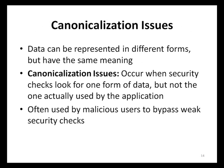Data can be represented in many different forms but still hold the same meaning — for instance, the word 'dog' can be represented in French, English, and Japanese, but each translation has the same meaning. In application security, a canonicalization issue occurs whenever a security check is done on data represented in one form and then used by an application in another form. Examples include data that is escaped, double-escaped, or triply escaped. Malicious users can use canonicalization issues to bypass weak security checks.